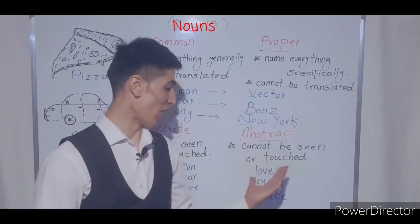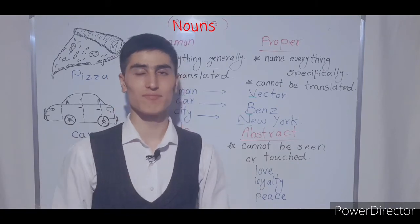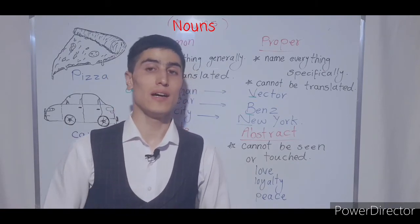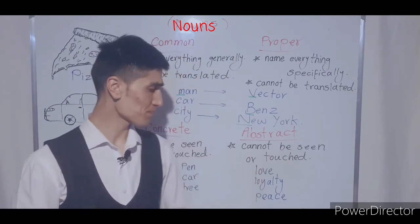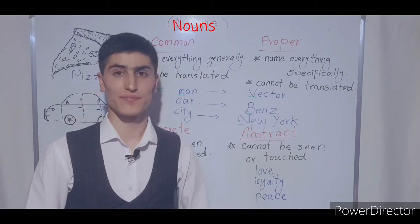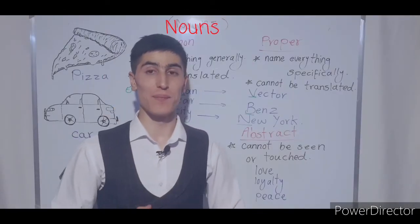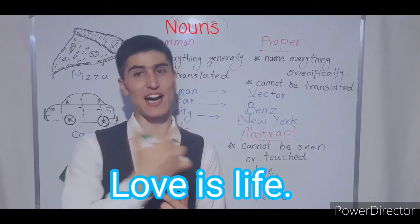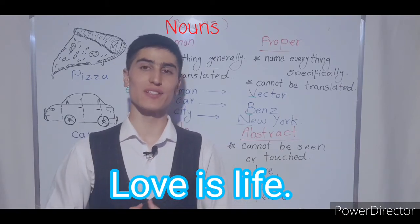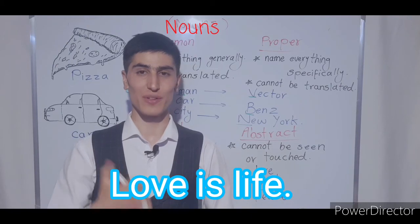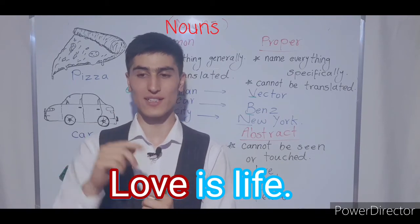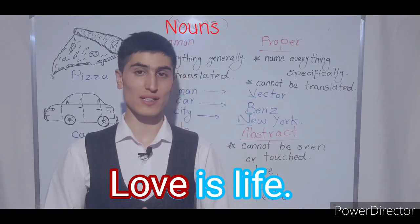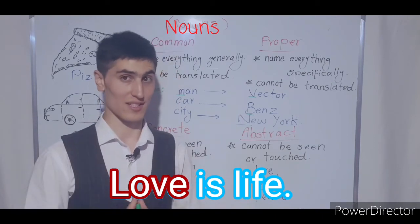For example: love, loyalty, peace, honesty, friendship, independence — these can be good examples for abstract nouns. We can say 'Love is life.' Here we can see that we have two nouns: one is 'love' and the other is 'life.' Both are abstract nouns and they don't have physical existence.